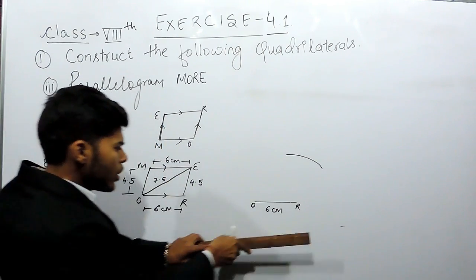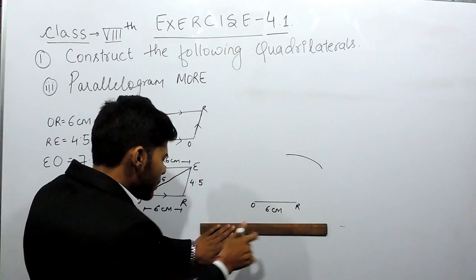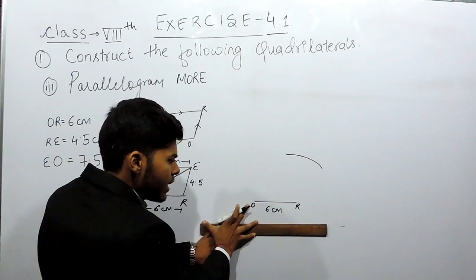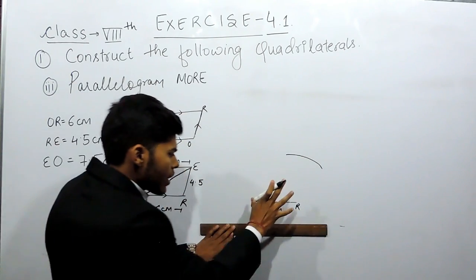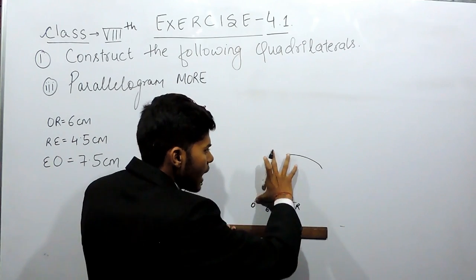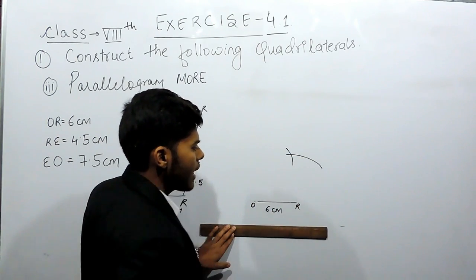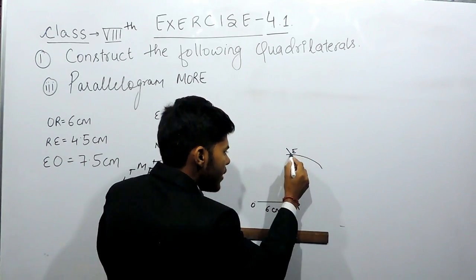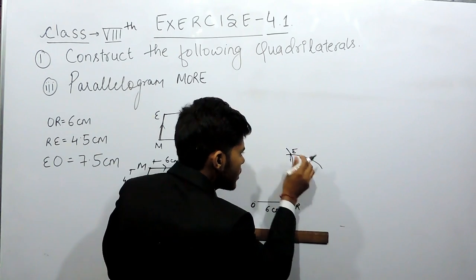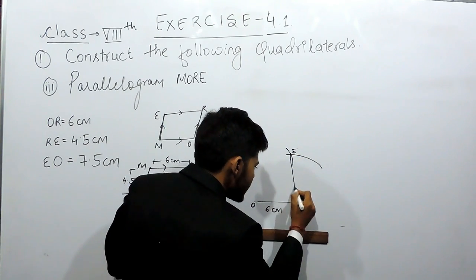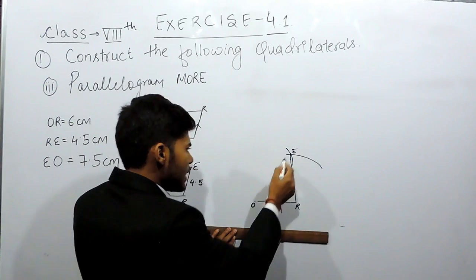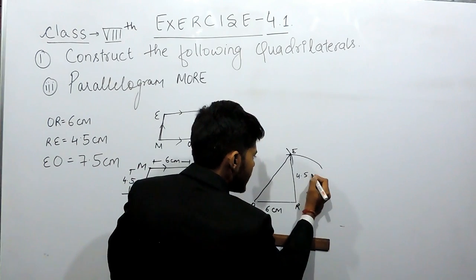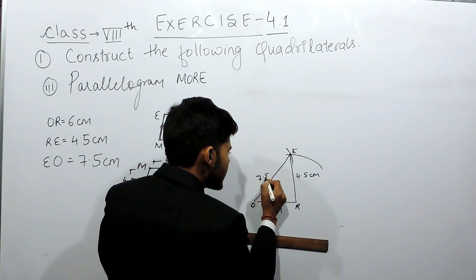Now after that, again we'll keep the ruler, keep the compass at point 0, and measure it till 7.5 centimeters. Like this, we'll keep the compass at point O and cut an arc of 7.5 centimeters like this. So this point will be point E, and if we join this, supposingly like this. This point is E. This is our diagonal. So this will equal 4.5 centimeters and this is 7.5 centimeters.